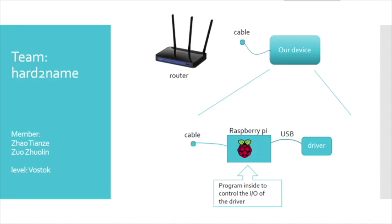Good afternoon everyone. This is Team Hard to Name. We are Zhao Tianze and Zhou Zhoulin. Our level is Woodstock. Many families are using old routers which only have several cable interfaces. Our purpose is to build a device which can improve an old-generation router into a personal cloud drive. To achieve this, our device should contain a Raspberry Pi and a hard disk. We will program the Raspberry Pi to let users control input-output of the drive through the local network.